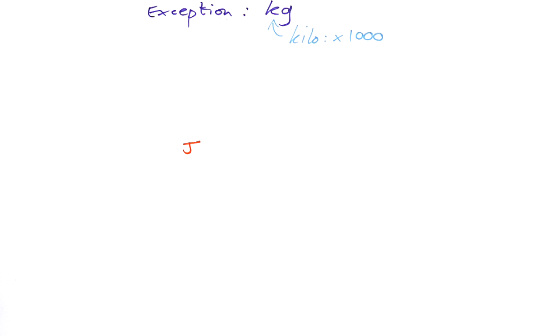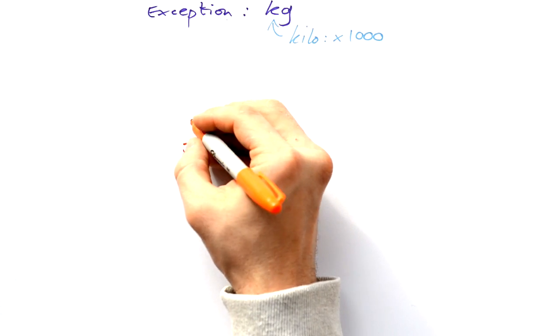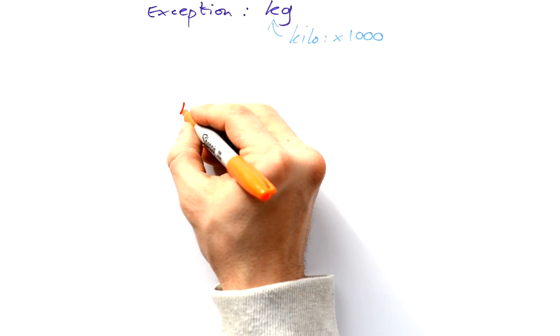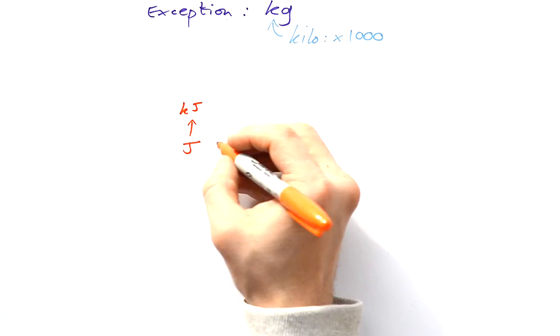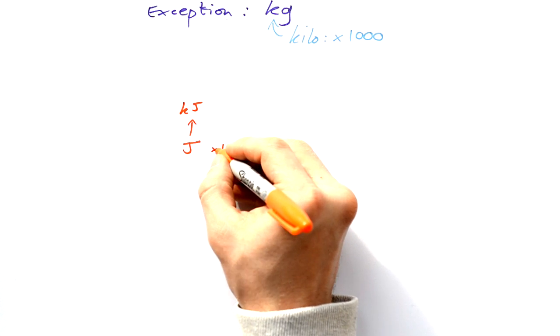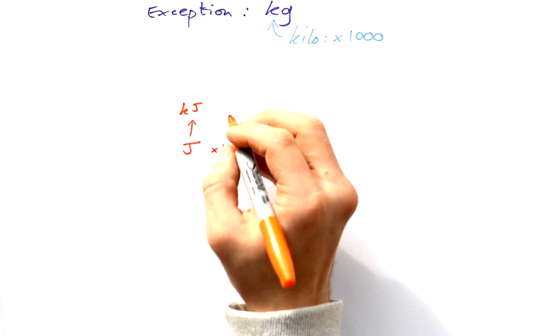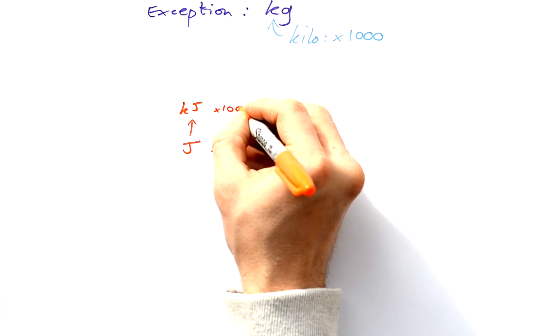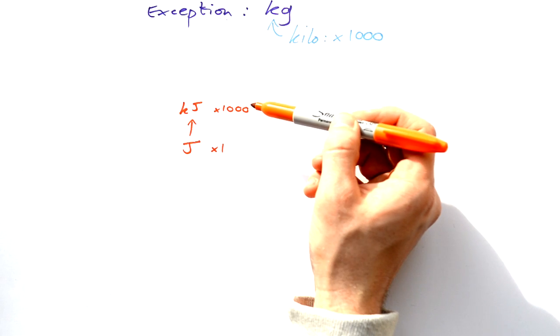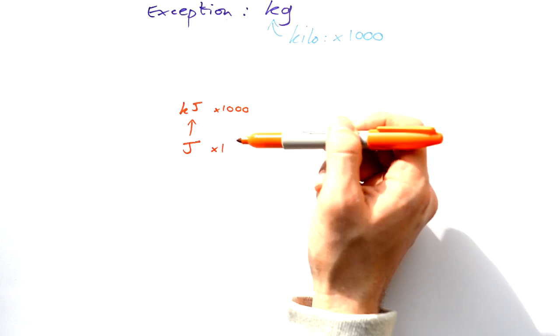If you have five joules, you don't have to do anything with that - it's just five joules, you can put that straight into an equation. But what if you're given kilojoules instead? Joules is just times by one. Kilojoules is times by a thousand. If you have five kilojoules, then that means you have five thousand joules.